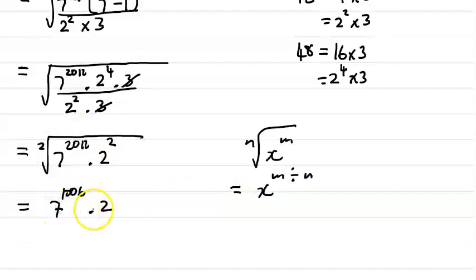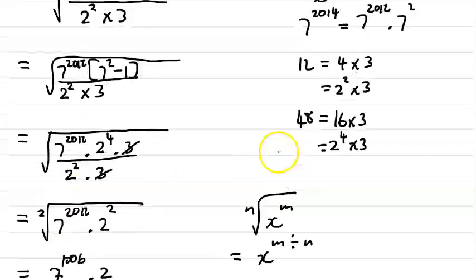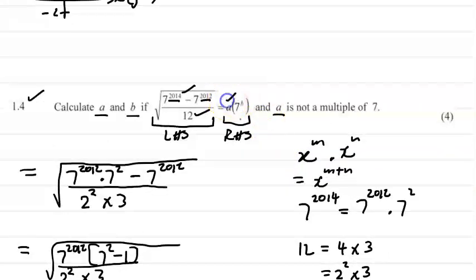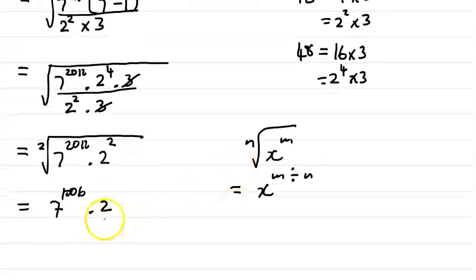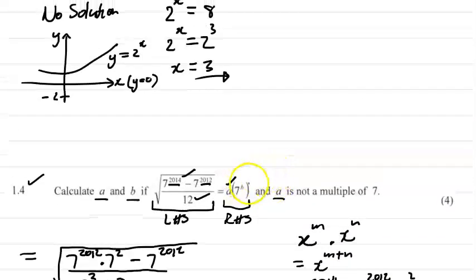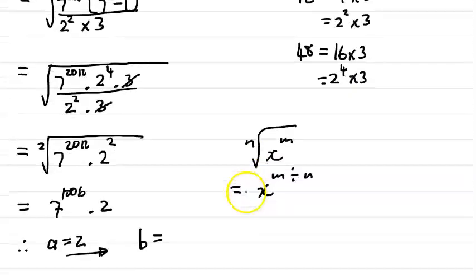So we get 2 times 7 to the 1006. Comparing with a times 7 to the b, we can conclude that a equals 2 and b equals 1006.